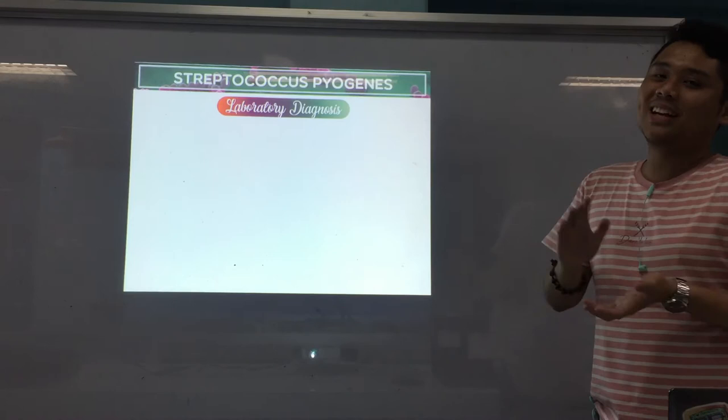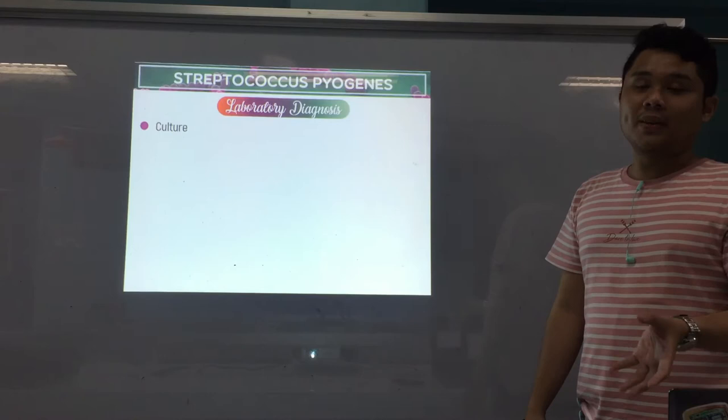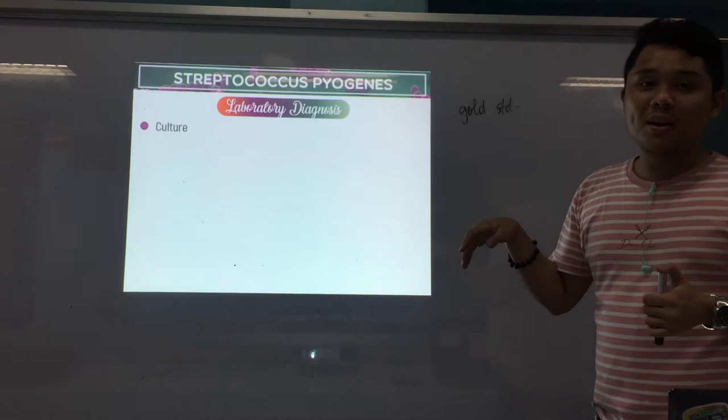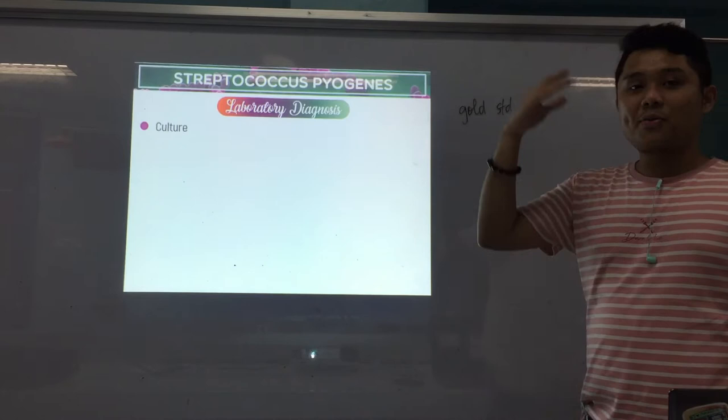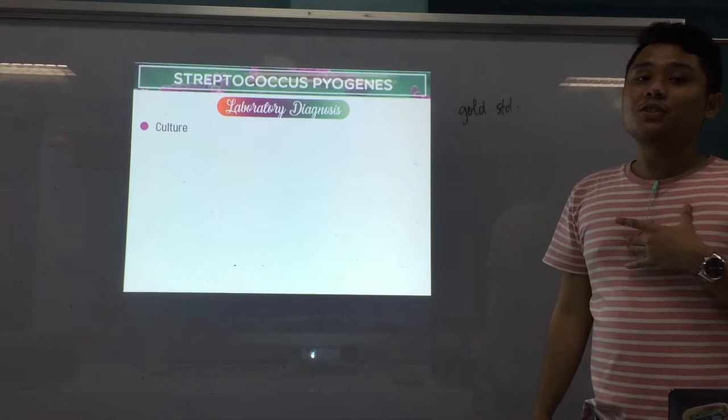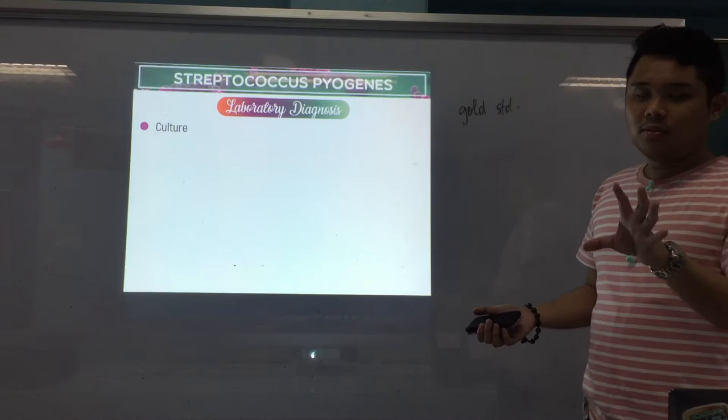For lab diagnosis, the first method is culture, and this is the gold standard. When you say gold standard, it's the reference method — it's the preferred method. So the gold standard for the diagnosis of S. pyogenes infections is, of course, culture. It's a bacteria, and it can be cultured.